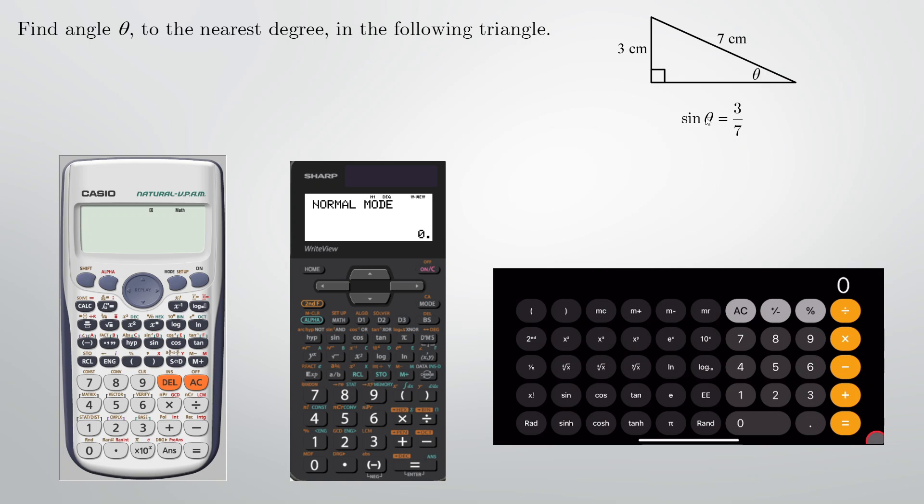We want to find angle theta, so we need to isolate theta. In other words we have to get rid of sine. How do we do that? Well we use the inverse sine function. Specifically we'll write theta equals sine inverse, that's the notation for it there, of 3/7. And now we have to make this calculation.